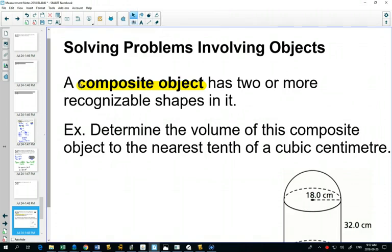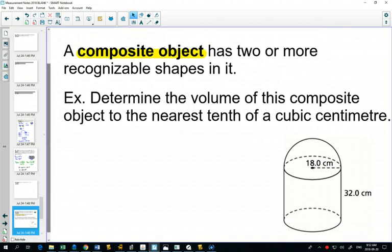Sometimes those shapes stuck together are easy, and some are more complicated. Generally, volume questions with composite objects are the easiest because if you can figure out the different shapes present, figure out the volume of each shape, you just add them together. Surface area gets a little bit more complicated because you have to think about what's not being covered and what is part of the outside surface.